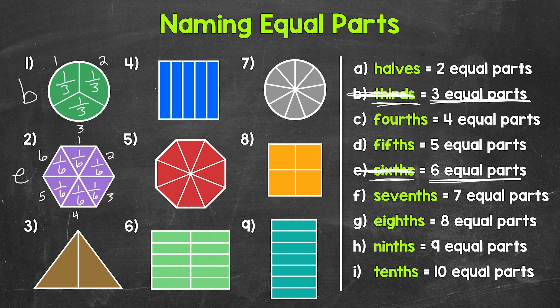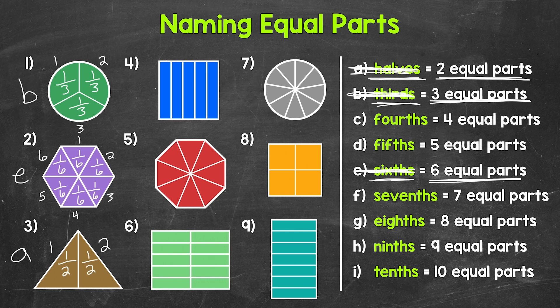Moving on to number 3, we have a triangle — that's our whole — and it has been divided into 1, 2 equal parts. We call 2 equal parts halves. So let's put an A next to number 3 and cross off halves. Each one of those equal parts is 1 half of the whole.